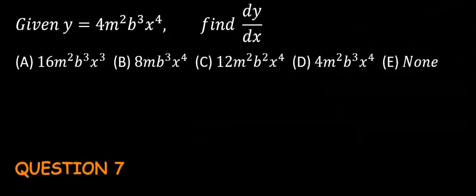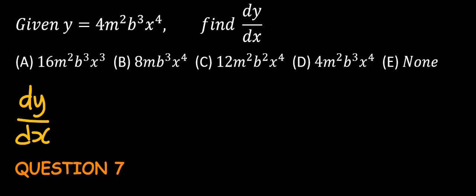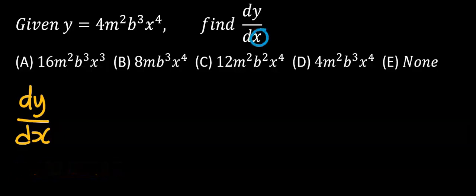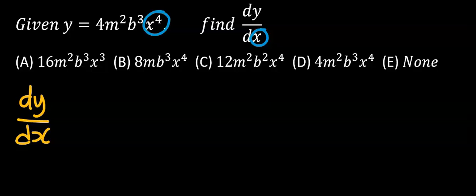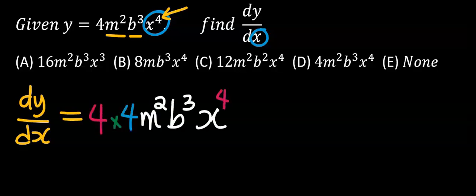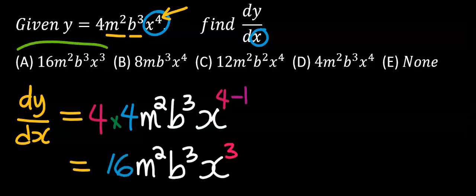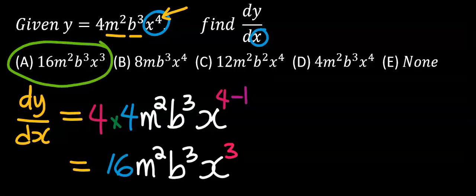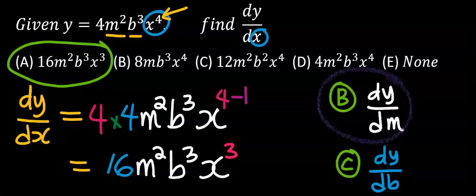Next, in this question we are going to respect only x in the function. Hence I consider only x to the power of 4 — only the 4 at the top makes the move. m squared and b cubed will not move; they remain constant. Here only the 4 with the x subtracts 1. From the options our answer is A. Option B is dy/dm and option C is dy/db.